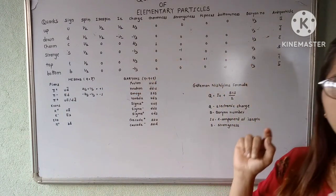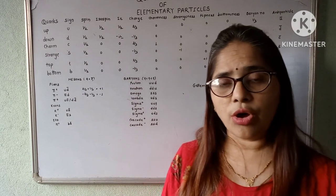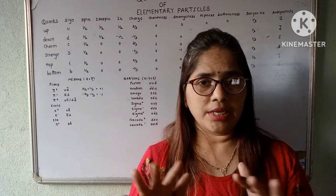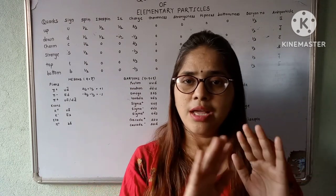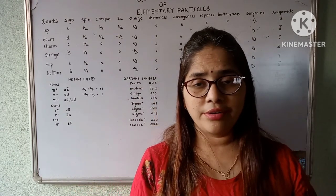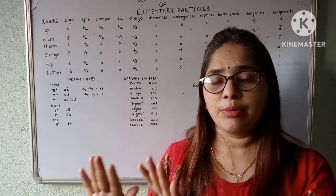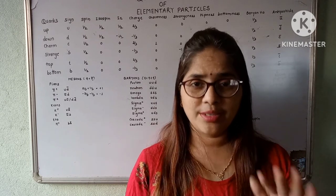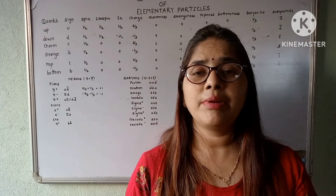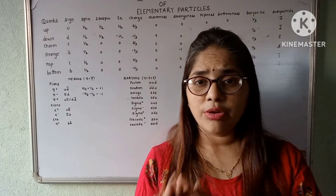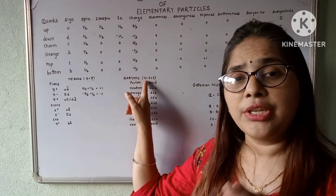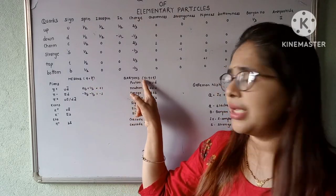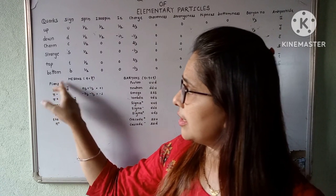Now let us see how quarks make up all the mesons and baryons. Hadrons are classified into mesons and baryons. Mesons and baryons are not elementary particles — they are made up of quarks. A meson is made up of one quark and one antiquark, whereas a baryon is made up of three quarks. Mesons are further classified into pions, kaons, and eta particles, among others.